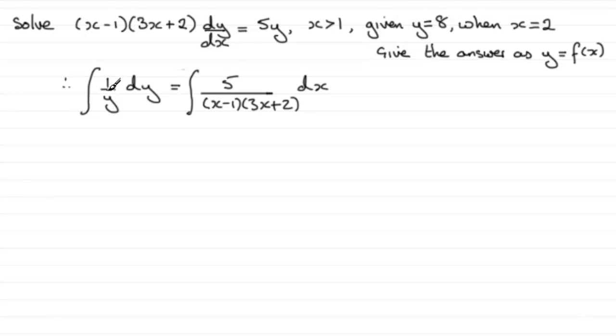What we need to do now is just integrate each of these. The integral of 1/y is going to be the natural log of y, so I'll put ln|y|. Now when it comes to integrating 5/[(x-1)(3x+2)], we actually did this in the previous part of the question.